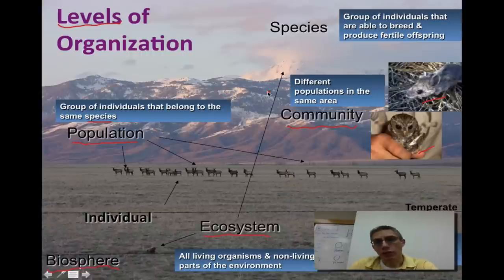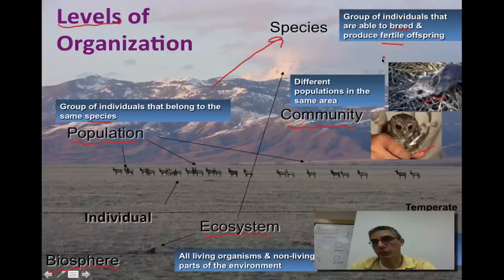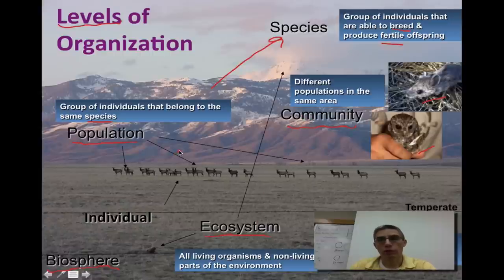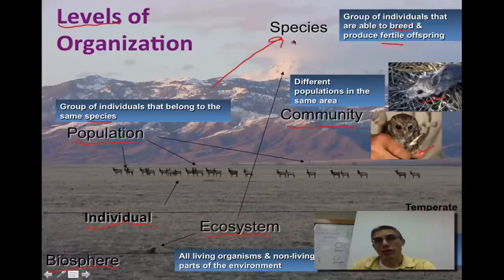When you talk about a population, you have to get a little more specific, and that brings us to a species — a group of individuals that are able to breed and produce fertile offspring. We've seen this word species throughout the year, and it's the most refined or smallest piece of this level of organization. So we start from the broadest — the biosphere — then the biome, then the ecosystem, then the community, then the population, then the species. One I left out was the individual, which of course represents part of that group of a certain species. Make sure you understand what each of these represents and the order from broadest to simplest.